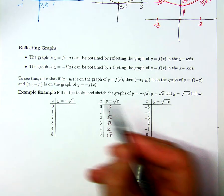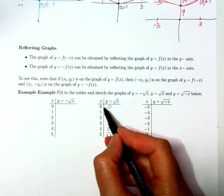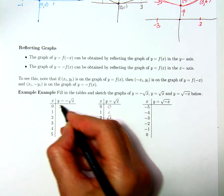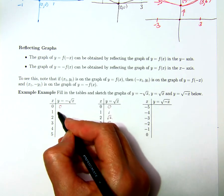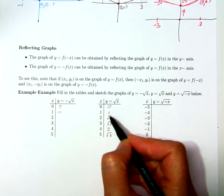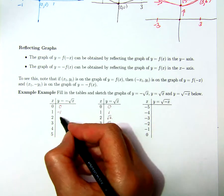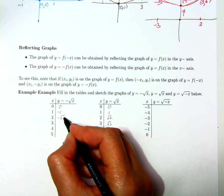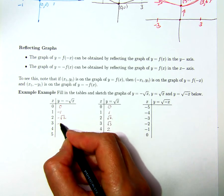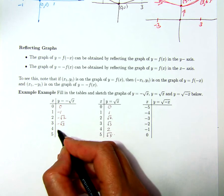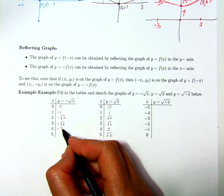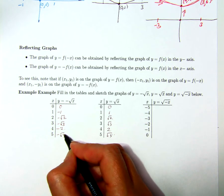And for y = -√x, that gives us 0, since -0 is 0. We have the point (1, -1) on this graph. It just switches all the y-values to negative: (2, -√2), (3, -√3), (4, -2), and (5, -√5).